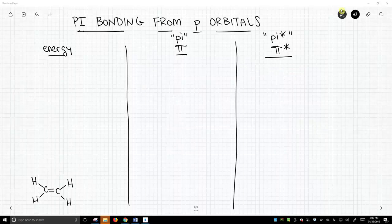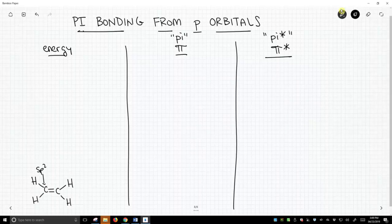Let's start in the very bottom left-hand corner. We have two carbons. Note that these are both sp2 hybridized carbons.